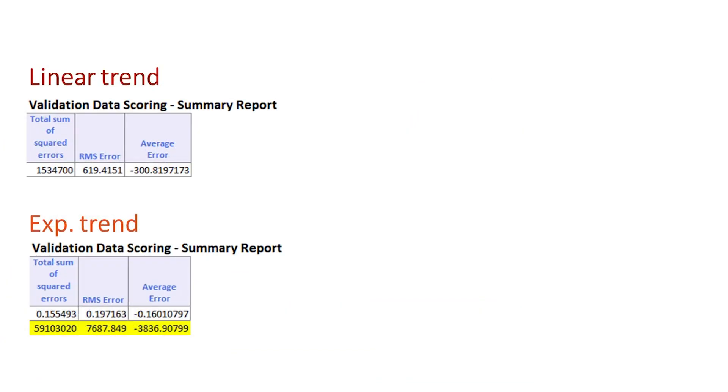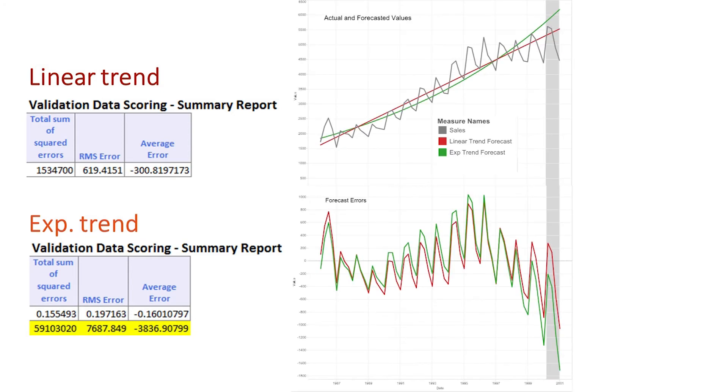Let's now compare the two trend models that we tried fitting to the quarterly sales data. We have the linear trend and the exponential trend models. From the charts, we see that the linear trend, the red line, looks a bit better than the exponential trend, which is the green line, especially towards the end, which is the more relevant period for us. If we compare performance metrics, we see the average error and the RMSE are much lower for the linear model. So the linear trend model seems better. But of course, neither of these models capture the very pronounced seasonality that is present in this series.